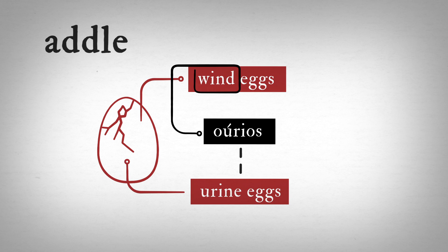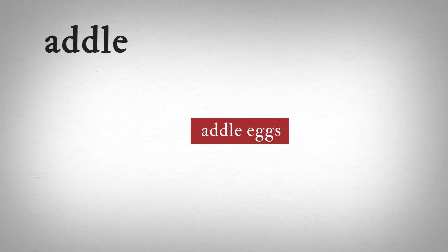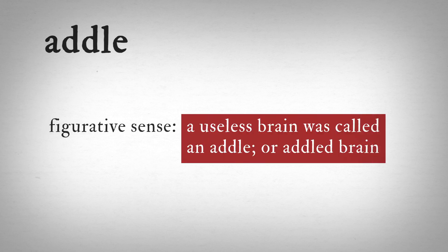This Latin term then got translated into English as addle egg. Around Shakespeare's time, the word started to be used figuratively. Addle eggs were useless since they didn't hatch, so a useless brain was called an addle or addled brain.